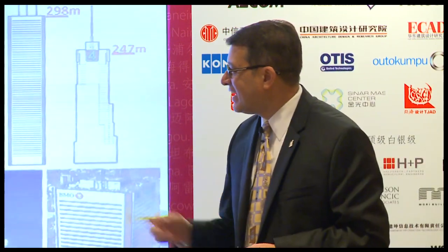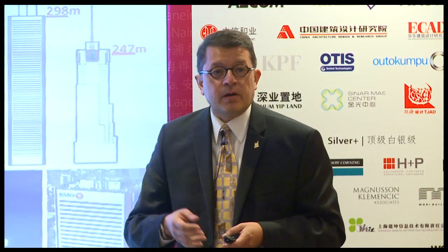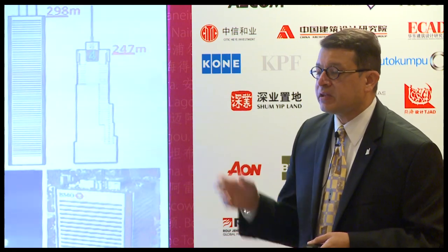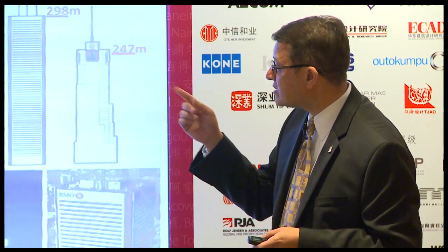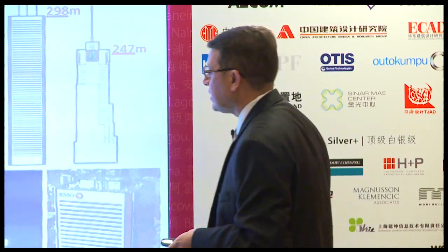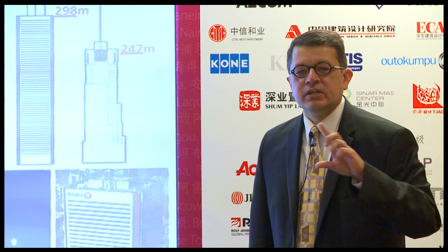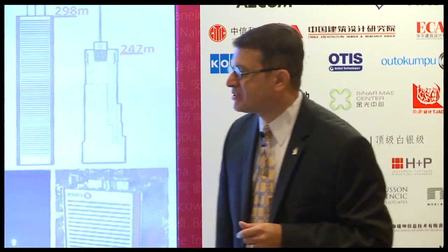Here's my provocative question, based on First Canadian Place, which was the 10th tallest building when completed in 1976. Similar to a building by the same architect, Edward Durrell Stone, the marble has been falling off and the building had to be reclad at a cost of $100 million — so a stone building is now a glass building. We were trying to integrate the four or five rooftop antennae that are quite unsightly. Had we been able to clean up the top and superimpose a top like One World Trade, would it have been an incentive to include this new top in the height criteria?